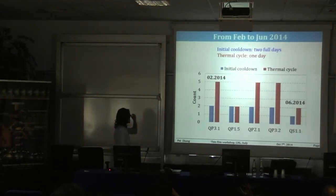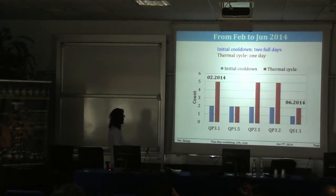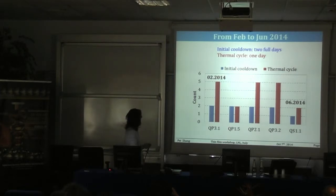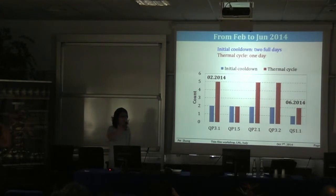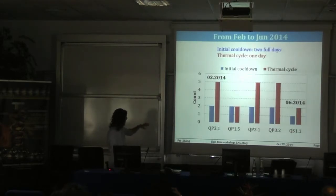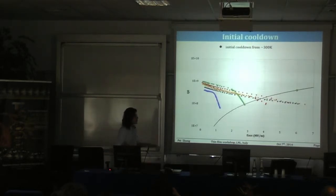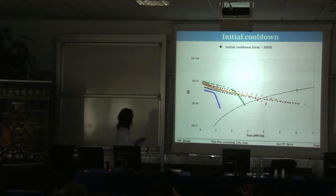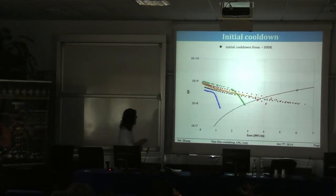The data I'm going to show today is from February to June this year for five cavities. Most cavities see about two initial cool-downs, meaning cooling from 300K down to 4.5K, and some cavities see up to five thermocycles. This is the performance of the cavities after the initial cool-down from 300K. Some cavities have field emission, some have a slope — the enhancement comes from the low-field part, and thermocycling won't help with field emission because that comes from different physics.